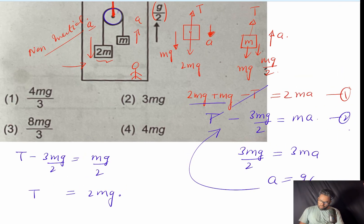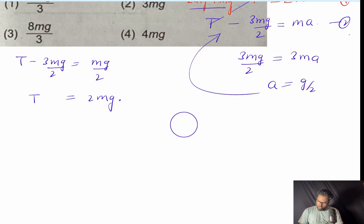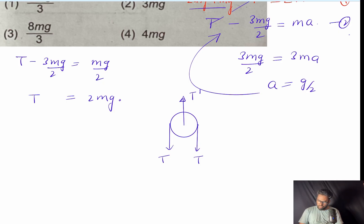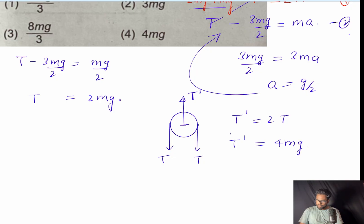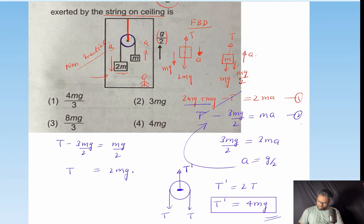Now for the free body diagram of the pulley: on one side tension T, on the other side tension T, and the force from the string on the ceiling is T'. Since the pulley is ideal and not moving with respect to the elevator, net force is zero, so T' equals 2T, which is 4mg. That is the force experienced on the ceiling.